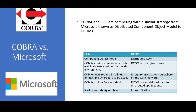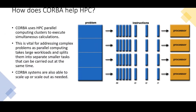CORBA and IIOP are competing with a similar strategy for Microsoft, known as Distributed Component Object Model, or DCOM. CORBA uses HPC parallel computing clusters to execute simultaneous calculations. This is vital for addressing complex problems, as parallel computing takes large workloads and splits them into separate smaller tasks that can be carried out at the same time. CORBA systems also are able to scale up and scale out as needed.